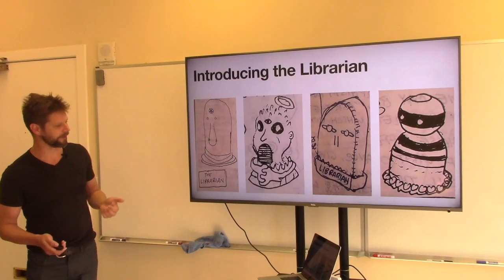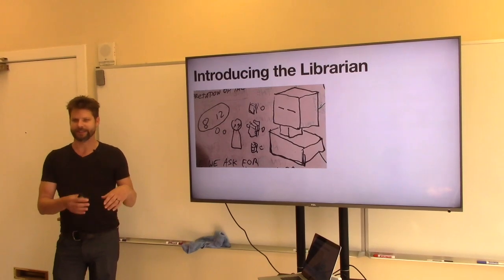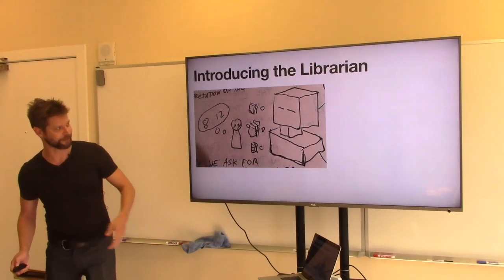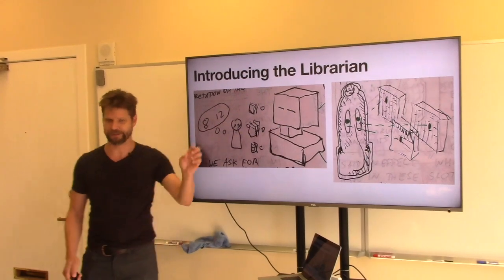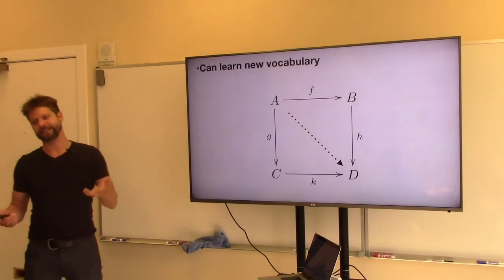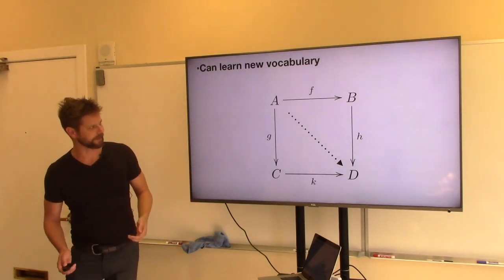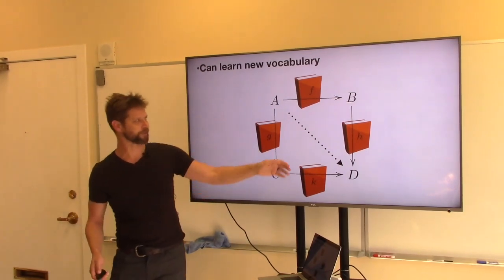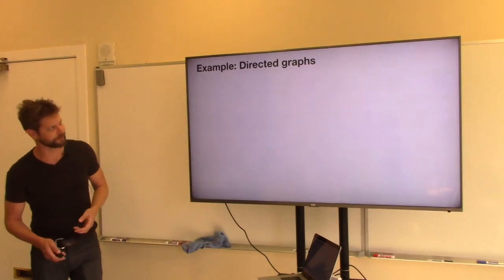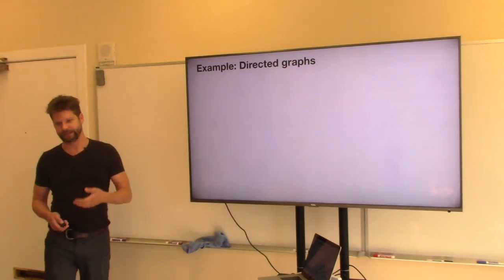The librarian can take requests: if I want to compose two books, I can see which slot numbers they're in, go to the librarian, and ask for the composite. The librarian sees all compositional data at once and can quickly identify the book in the relevant slot. Maybe the librarian starts out only knowing what composition is, but we can invent new terminology — like if I want to think about commutative squares, I can explain to the librarian that I'm interested in four books with a certain compositional relationship.